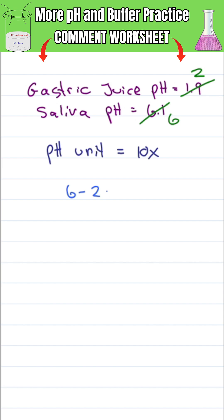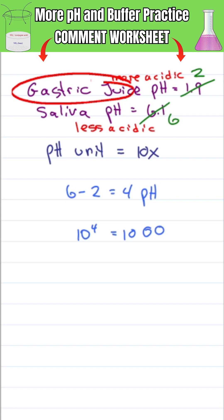If 6 minus 2 equals 4, the difference between them is 4 pH units. And if every pH unit is a factor of 10, the difference is about 10 to the 4th, or 1,000, where the lower pH is more acidic and the higher pH less acidic. That makes the more acidic gastric juice 1,000 times more acidic than their saliva.